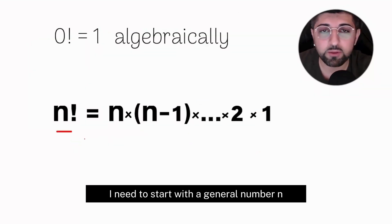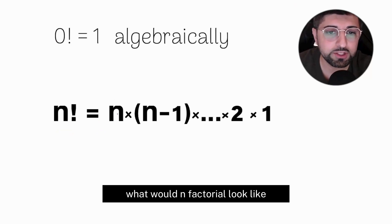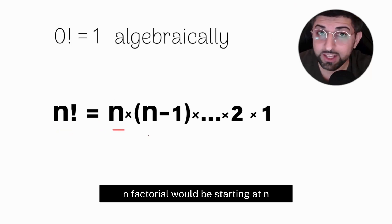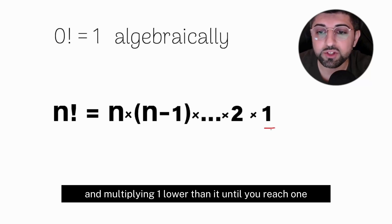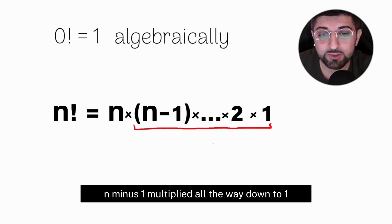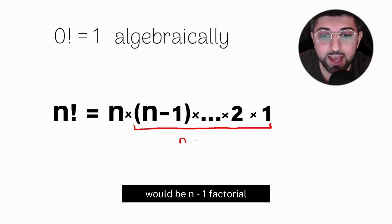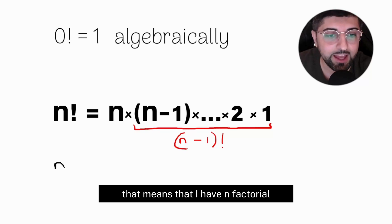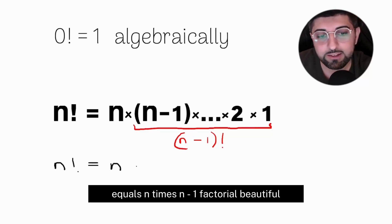I need to start with the general number n. What would n factorial look like? n factorial would be starting at n and multiplying one lower than it until you reach one. So I can also say that this term, n minus one multiplied all the way down to one, would be (n-1) factorial. Why is that relevant? That means I have n! = n × (n-1)!. Beautiful.